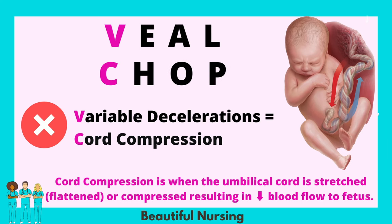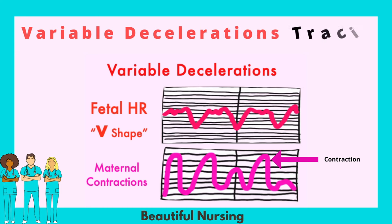Variable decelerations — I remember variable for very bad. These are usually a drop in the fetal heart rate of 15 beats per minute. As you look back at VEAL CHOP, variable stands for cord compression. With variable, just remember those Vs: variable, very bad. If you look at this tracing of variable decelerations, you'll notice that the fetal heart rate, which is the red line, has a V shape.